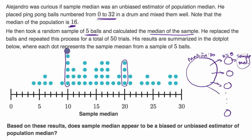In five of those sample medians, we got a sample median of 10. And so what he ends up creating with these dots is really an approximation of the sampling distribution of the sample medians.